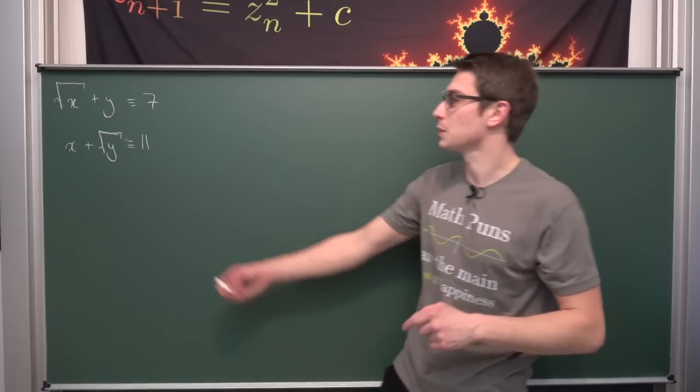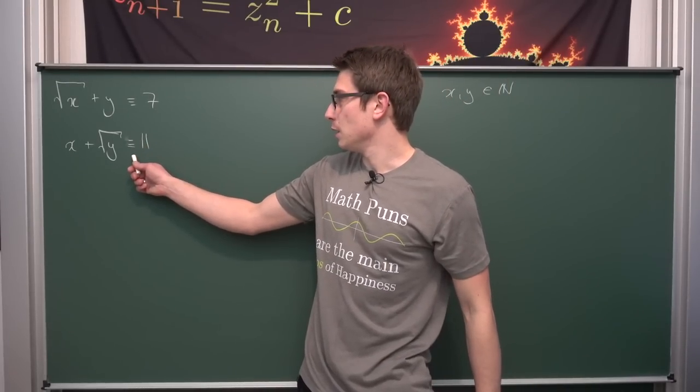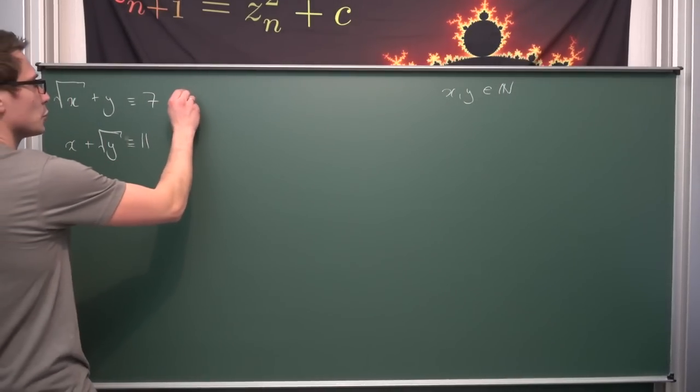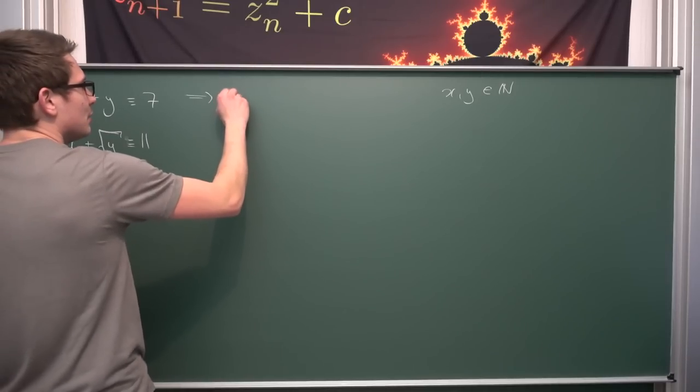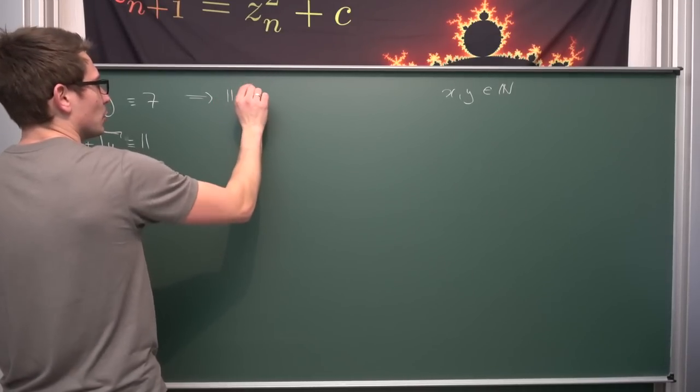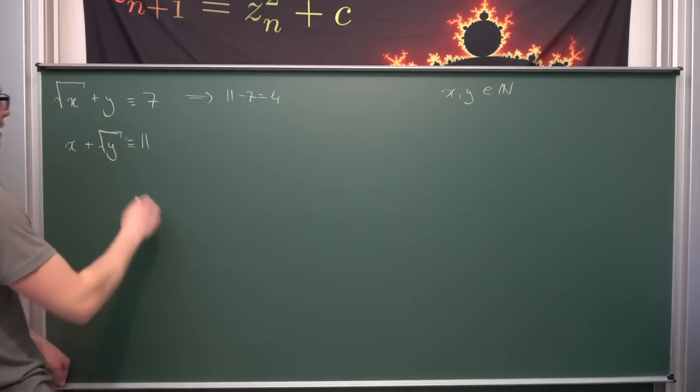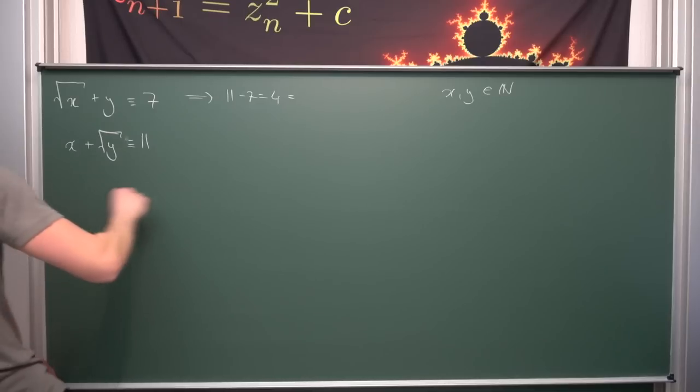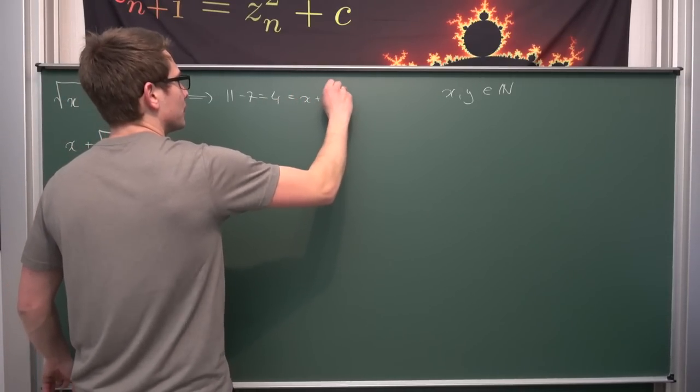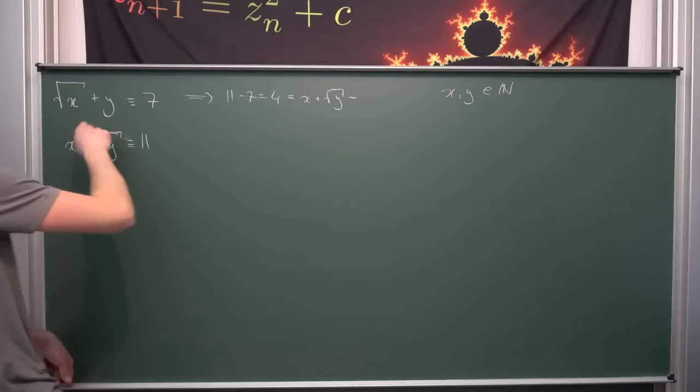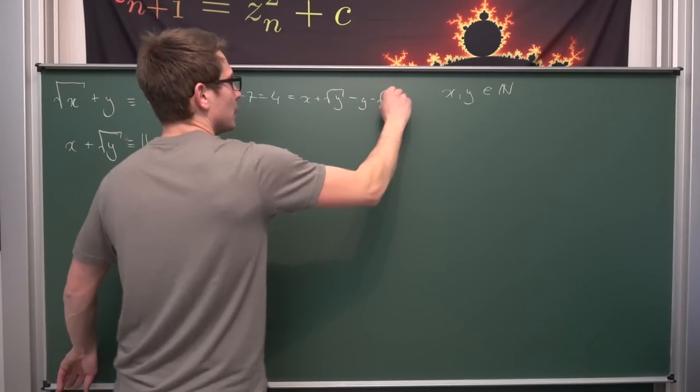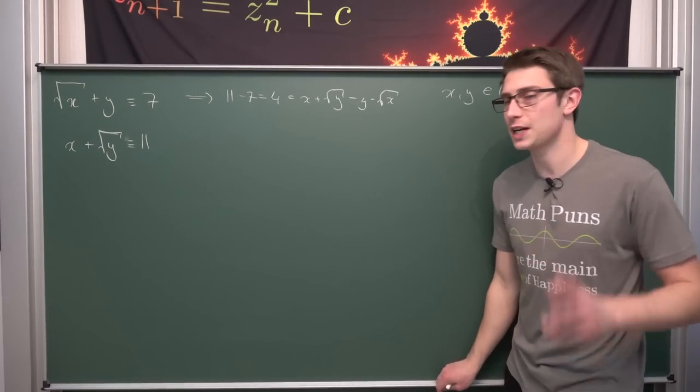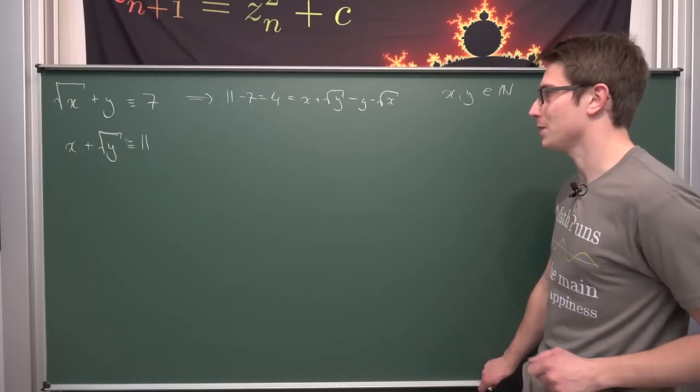Now we're going to subtract the second equation from the first one, so we don't get into the negatives. 11 minus 7 equals 4, and if we subtract these two from one another, we're going to get x plus square root of y, then minus y minus square root of x.